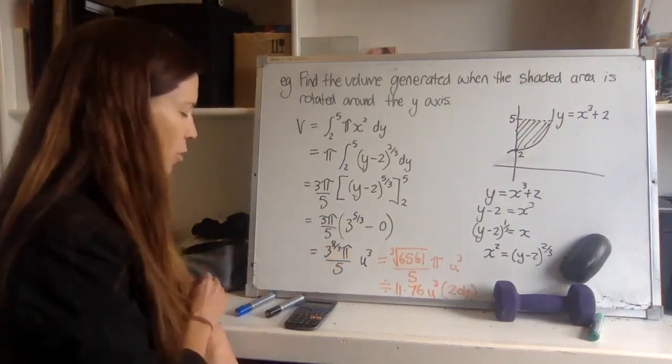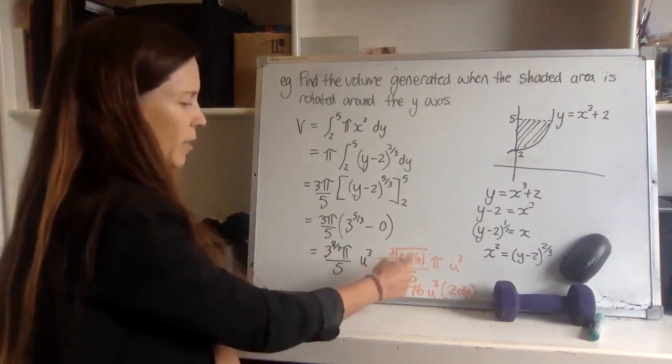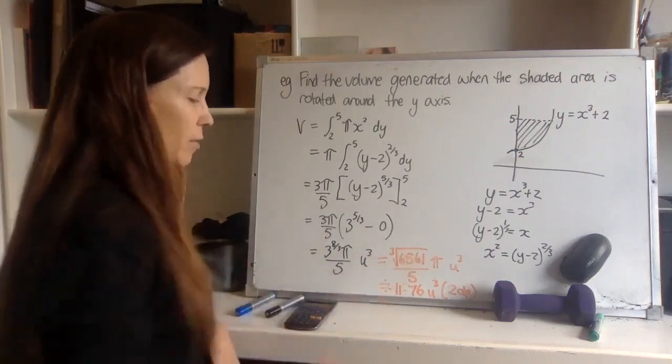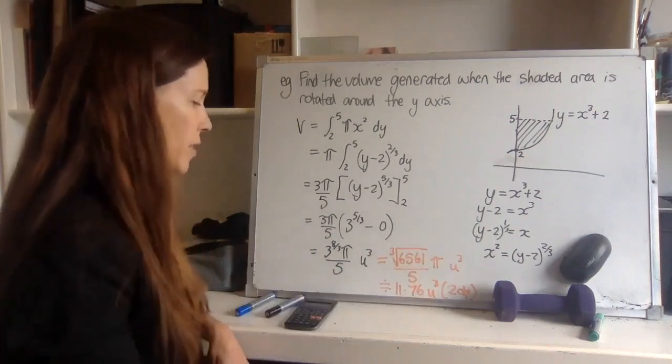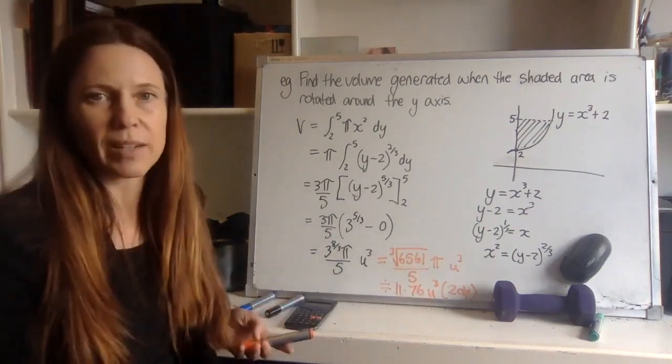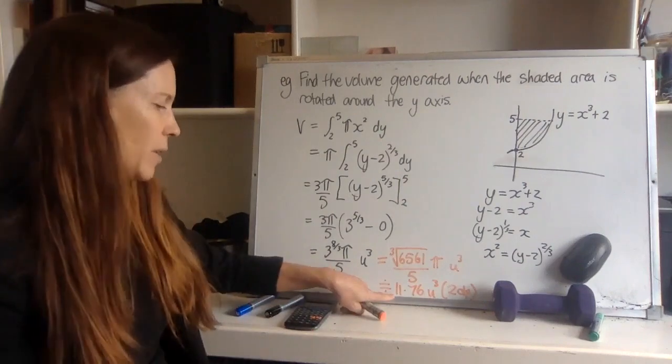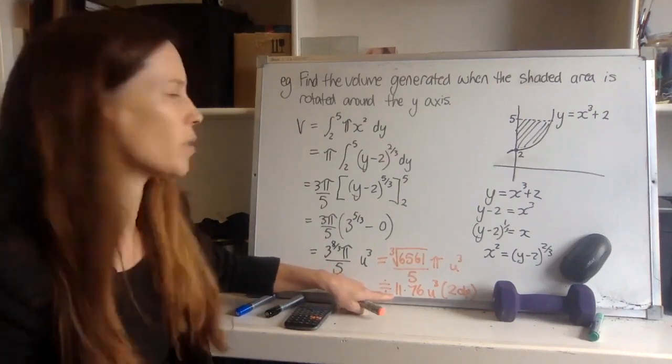So you could leave it like that. You could do three to the power of eight, put that in a cube root bracket over five, multiplied by pi cubic units. Or if the question had asked you to round it, say, to two decimal places, then you can have something like 11.76 as an approximation.